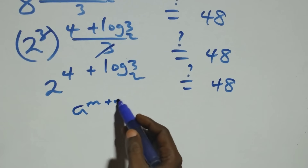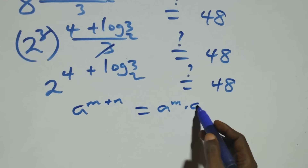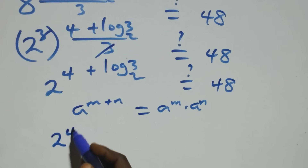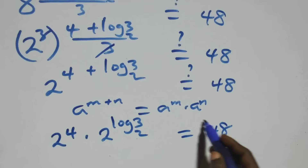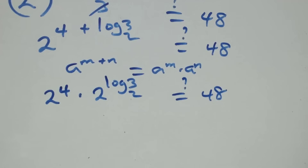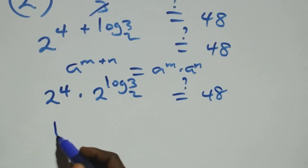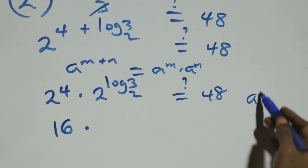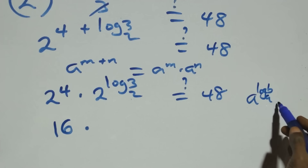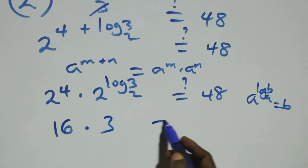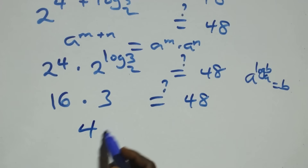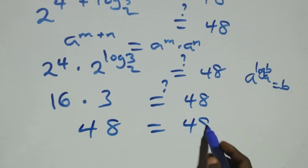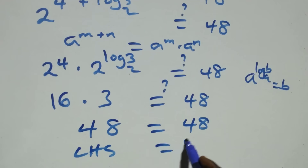Here we apply the indices rule: a raised to power (m+n) = a^m times a^n. So we have 2 raised to power 4 times 2 raised to power log 3 base 2, equals 48. Now 2 raised to power 4 is 16, and a raised to power log b base a equals b, so 2 raised to power log 3 base 2 equals 3. Therefore 16 times 3 gives us 48, which equals 48. Left hand side equals right hand side.